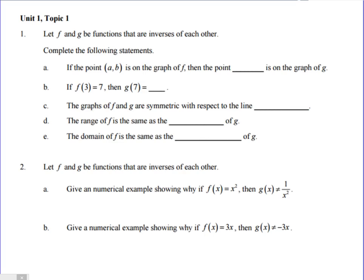Alright, so number one, let f and g be functions that are inverses of each other. Complete the following statements. If the point (a,b) is on the graph of f, then also the point (b,a) is going to be on that graph. So our x and our y values end up switching places.